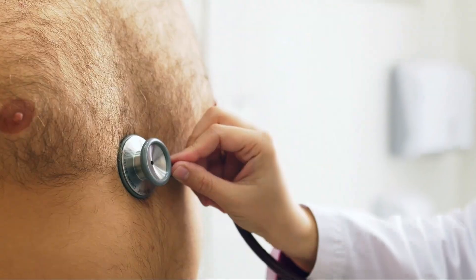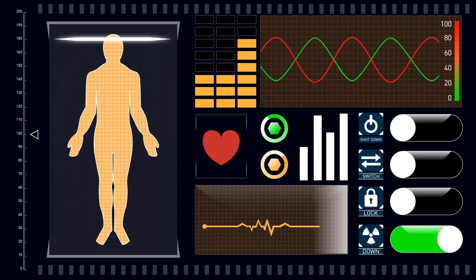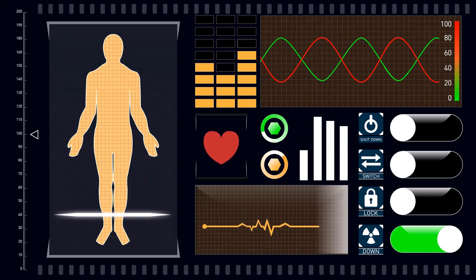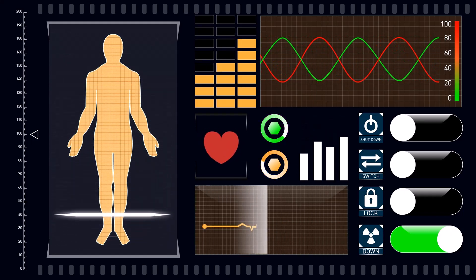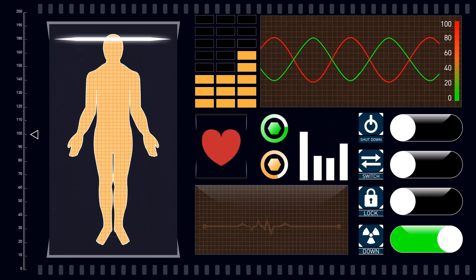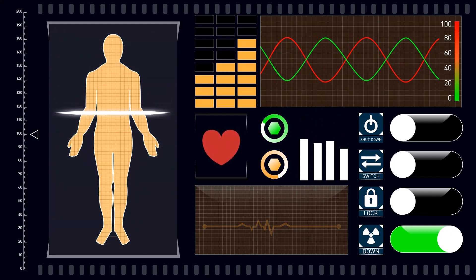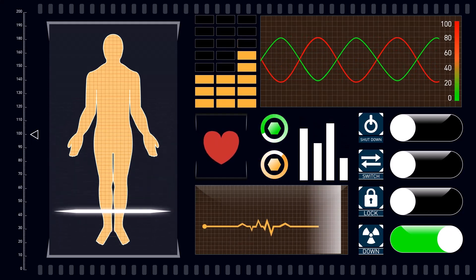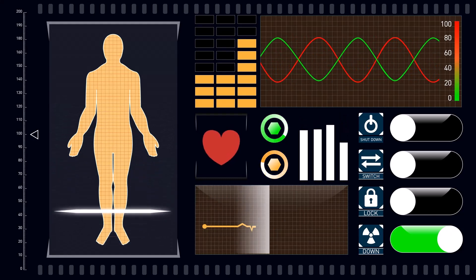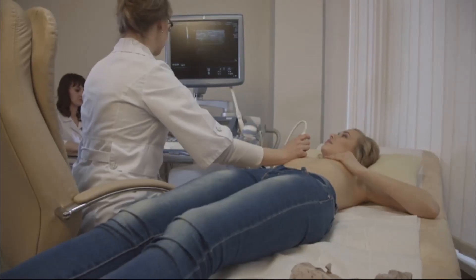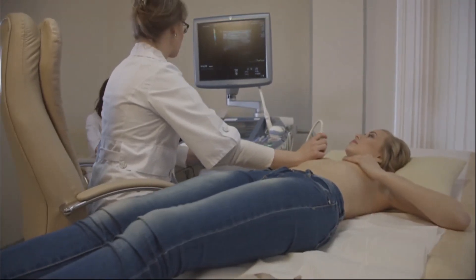Let's touch on the precautionary principle — a risk management strategy often employed in situations of uncertainty, especially where there is potential for harm. It suggests that if an action or policy has a suspected risk of causing harm, the absence of scientific consensus should not be used as a reason to postpone measures to prevent potential harm. This principle can guide decisions about the level of urgency in a situation, allowing for a more nuanced approach to time-sensitive situations.